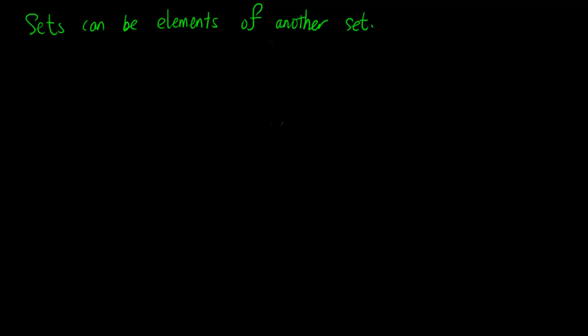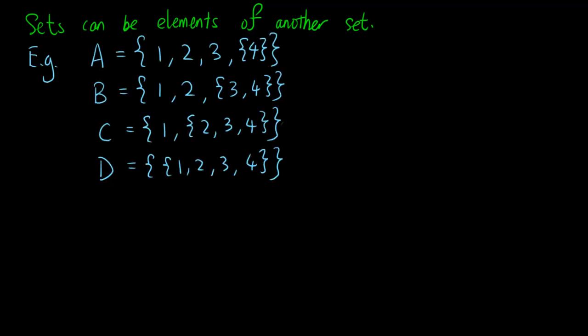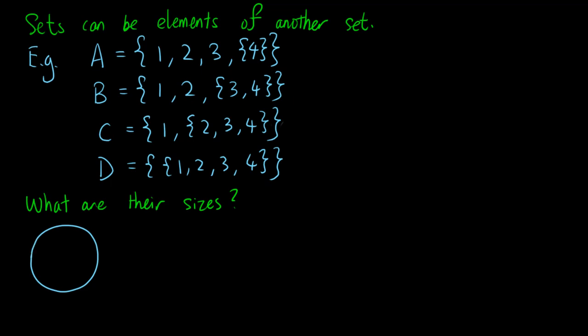Let's consider some examples to make things clear. Suppose we have four sets A, B, C and D. They look awfully similar — the only difference is the placement of the curly brackets. Let's figure out the sizes of these sets one by one, using Venn diagrams to help us understand them. For A, it contains the elements 1, 2, 3, and the set {4}. It should be easy to conclude that there are four elements in A, so the size of A is 4.